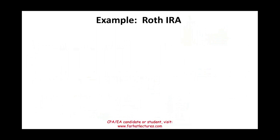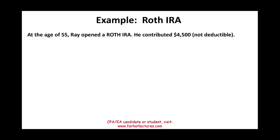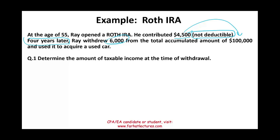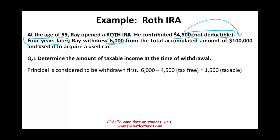Now let's look at an example with a Roth IRA. At age 55, Ray opened a Roth IRA and contributed $4,500 — not deductible by its nature. Four years later — uh-oh, not good, because you have to wait at least five years — Ray withdrew $6,000 from a total accumulated amount of $100,000. In a Roth IRA, we assume the principal is taken out first. So of the $6,000 withdrawn, $4,500 is tax-free as a return of capital, and $1,500 is taxable as earnings.